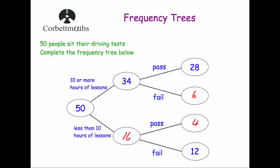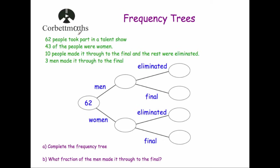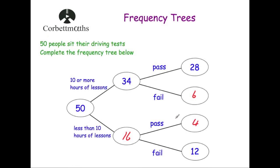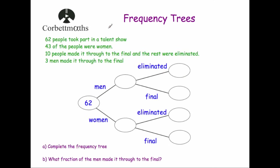Let's look at another question. 60 people took part in a talent show. 43 of the people were women, 10 people made it through to the final and the rest were eliminated, and 3 men made it through to the final. Part A: complete the frequency tree. This one's trickier because we have to read a passage to fill out the frequency tree, which is likely to come up in the exam.